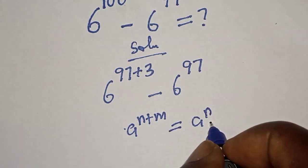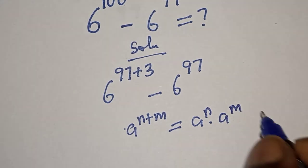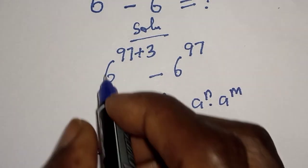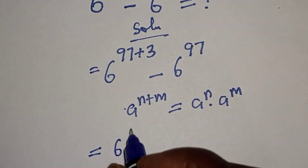equal to a to the power n multiplied by a to the power m. Then we have 6 to the power of 97 multiplied by 6 to the power of three